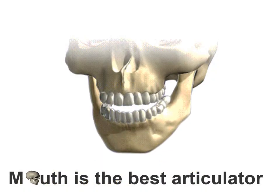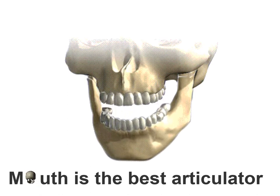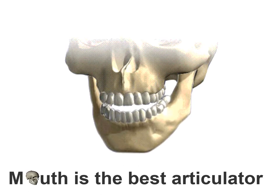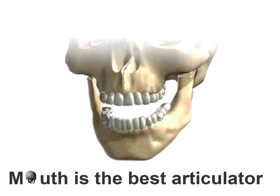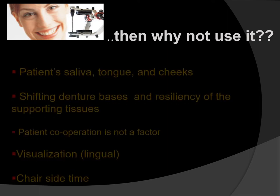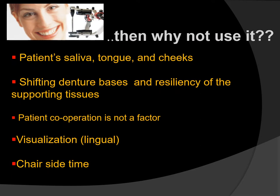We know that the mouth is the best articulator — an understanding of the neurophysiology of mandibular movements and the influence of several morphological and behavioral considerations led to the notion that each patient is his or her own best articulator. Even so, mechanical articulators do have some advantages over the patient's mouth for developing patient occlusion. First, the patient's saliva, tongue, and cheek will not be a problem while using an articulator. Also, the shifting denture base and resiliency of the supporting tissues make it extremely difficult to correct complete denture occlusion in the mouth, but after obtaining interocclusal records, complete denture occlusion can be refined outside the mouth on an articulator.